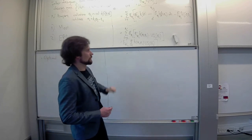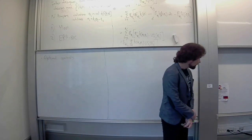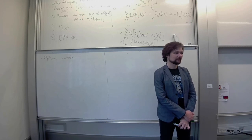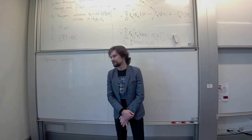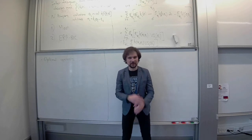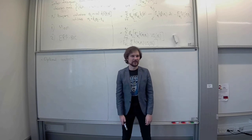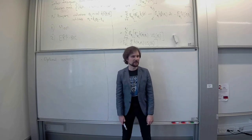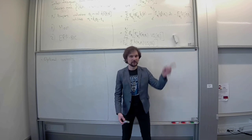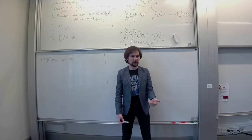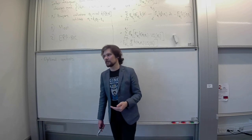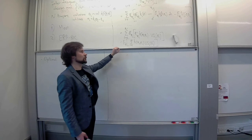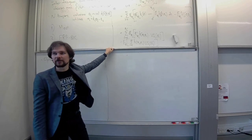Second remark that I forgot to make about optimal auctions. If the buyers are symmetric, as we just assumed, then we can actually implement this mechanism in a very simple way. Many times we just look at these direct revelation mechanisms where players are reporting their types and we just give them some allocation and transfers. In reality there are simpler mechanisms that usually do the job. So in this case, if buyers are symmetric, any auction will do the job. Second price for example. As long as you set a reserve price. So a second price auction with a reserve price would be our optimal auction with symmetric buyers. Because there you do achieve the exact same thing.